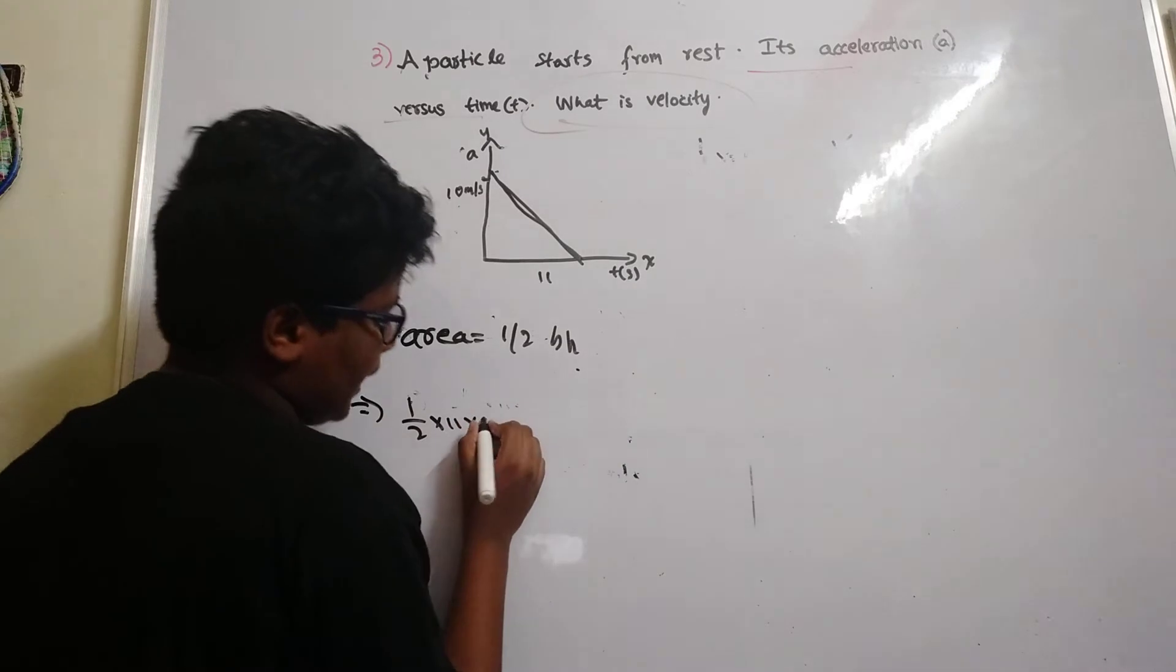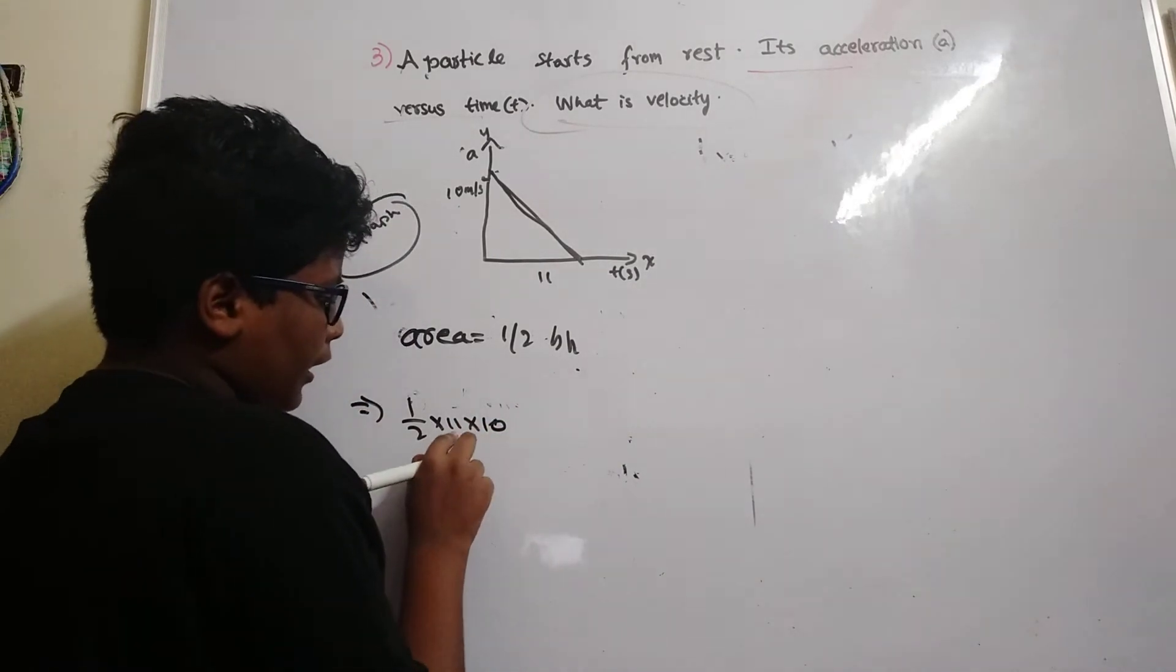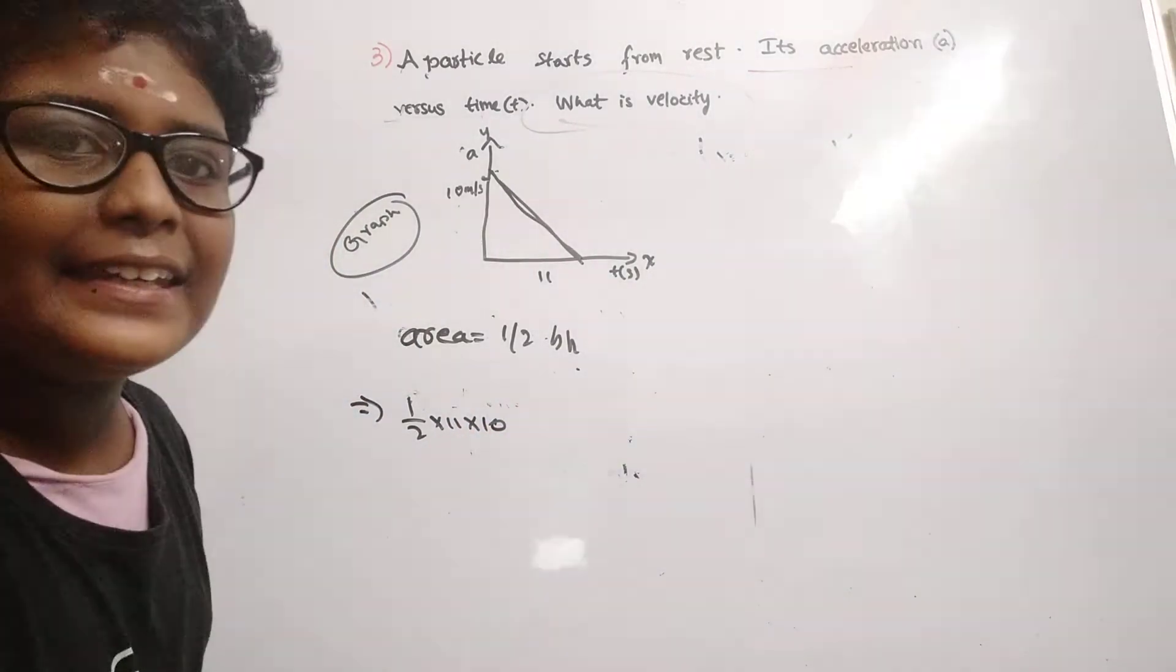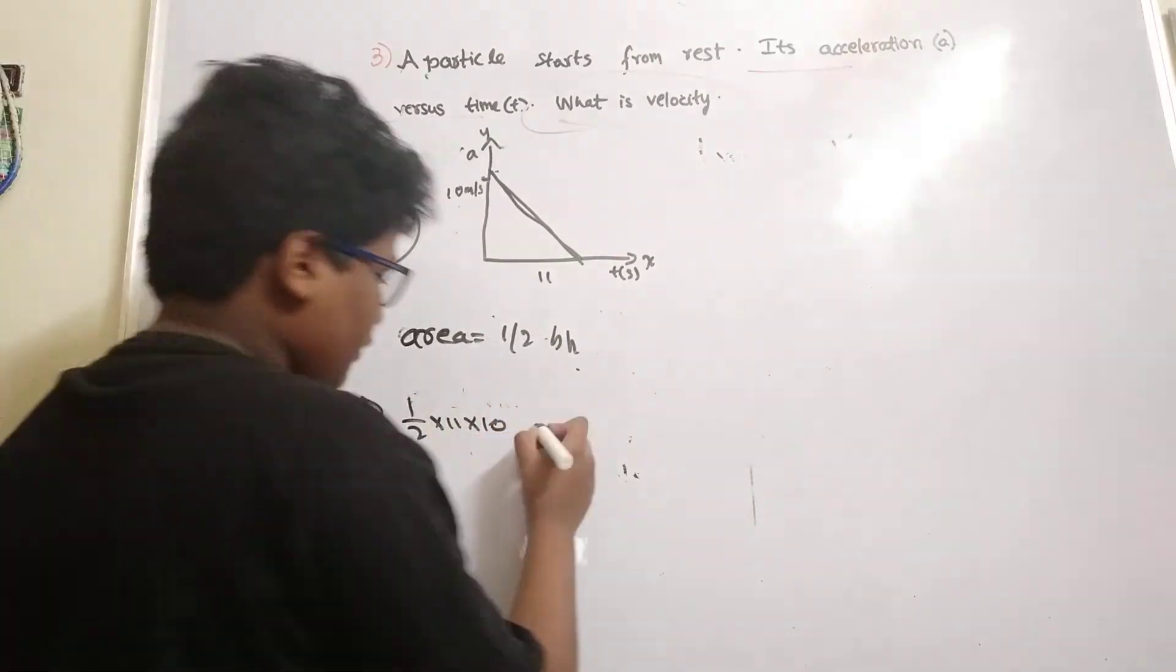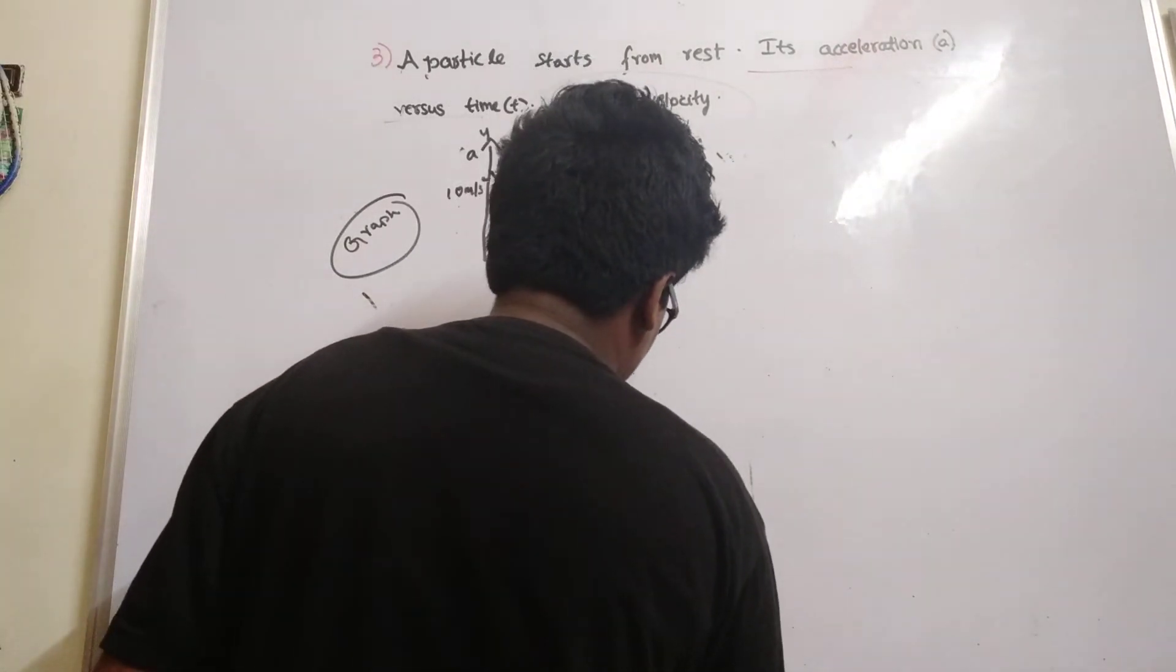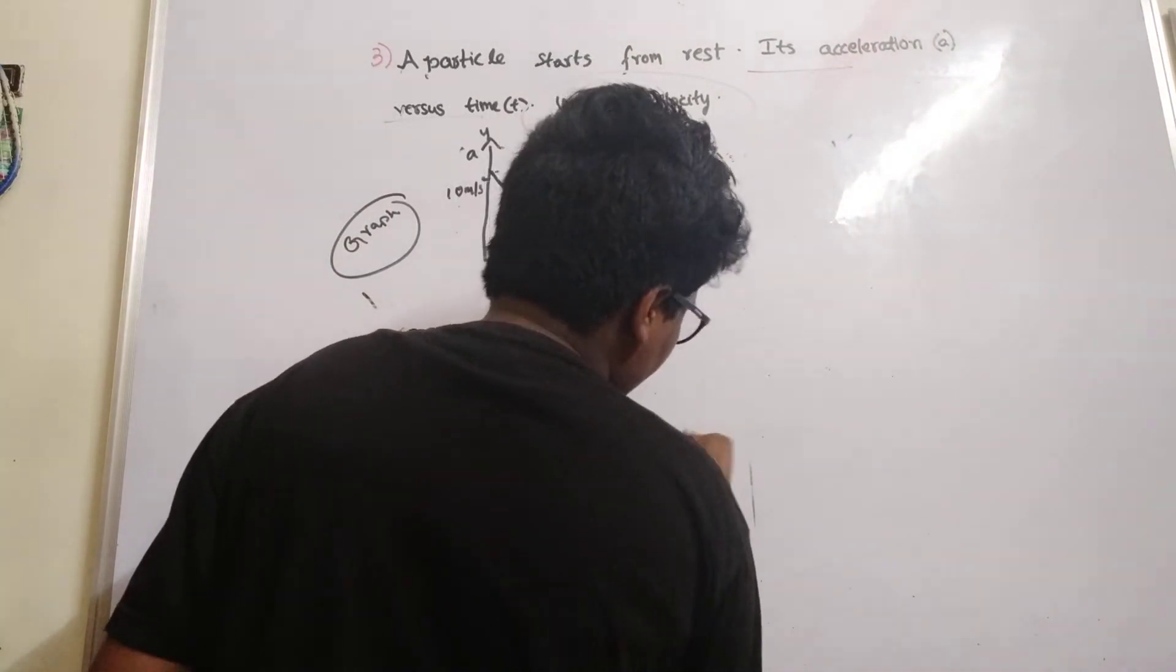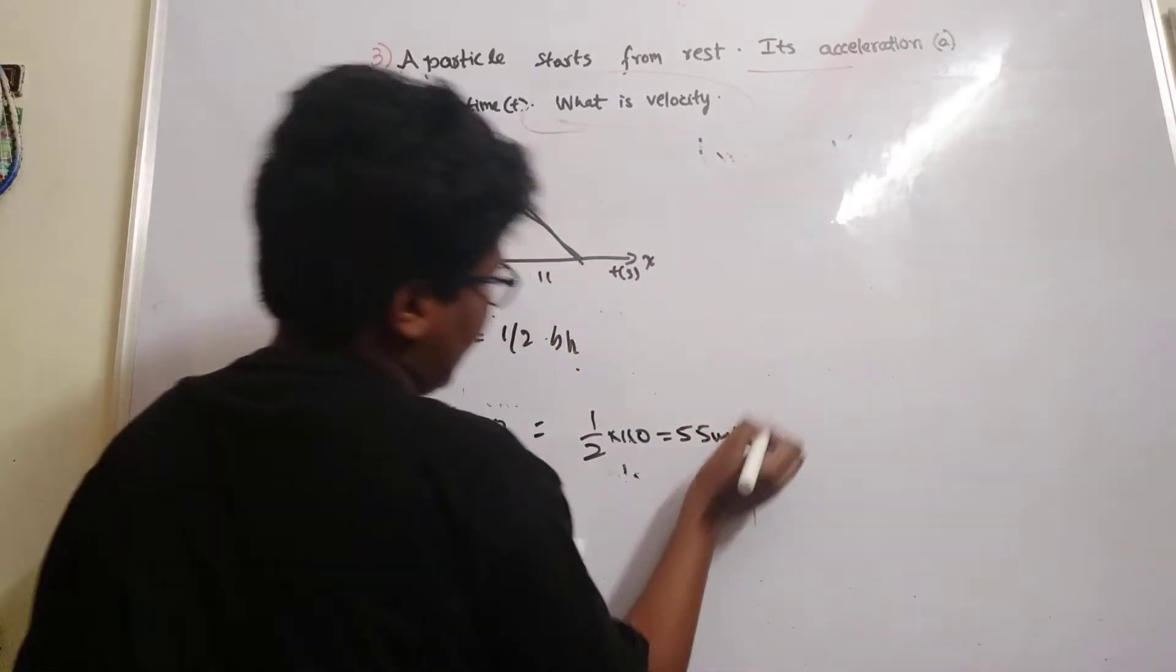Height means the acceleration given, which is 11 times 10, equals 110. Half of 110 equals 55 meters per second.